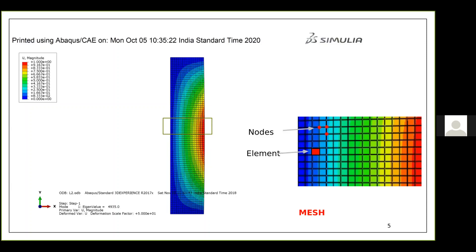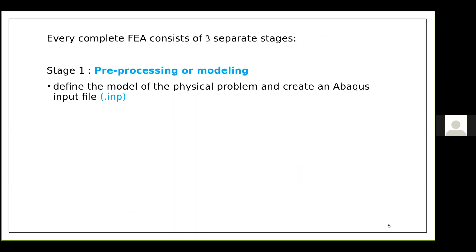Any finite element analysis consists of three stages. The first is the pre-processing or modeling stage, where you create your model graphically — drawing the geometry, defining properties, boundary conditions, and loads. That is the pre-processing stage where you create your model.